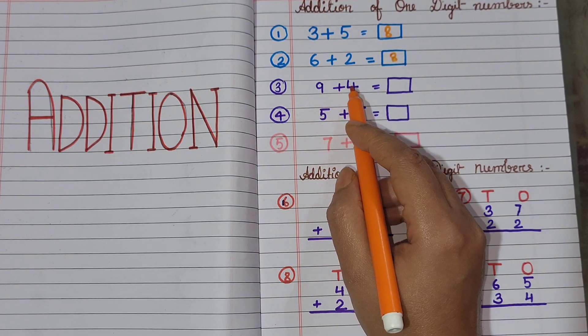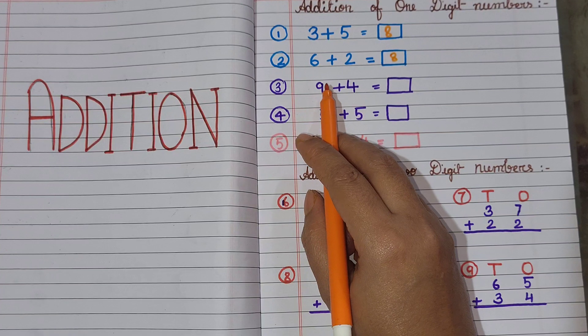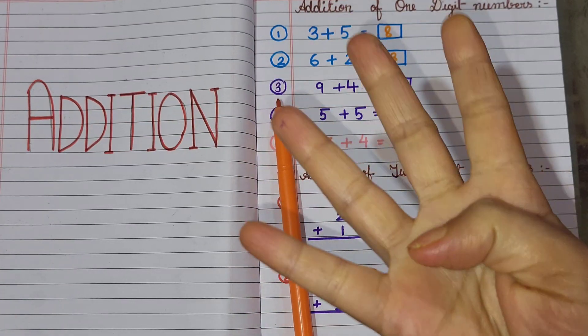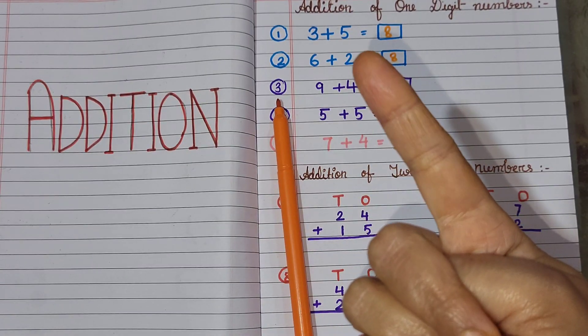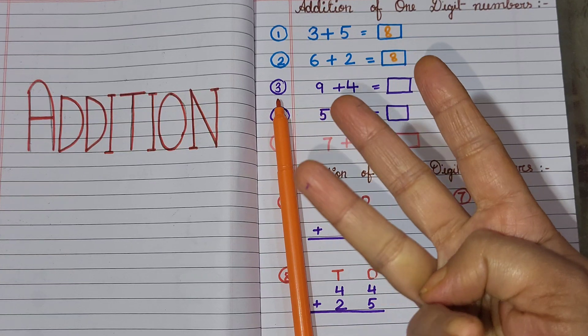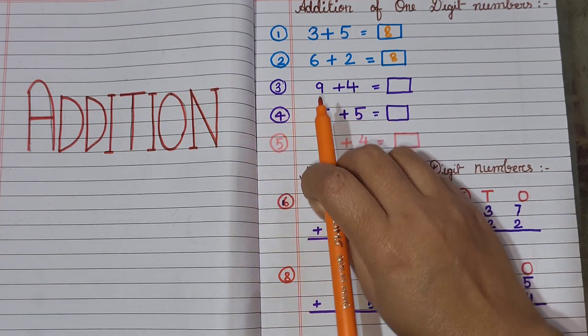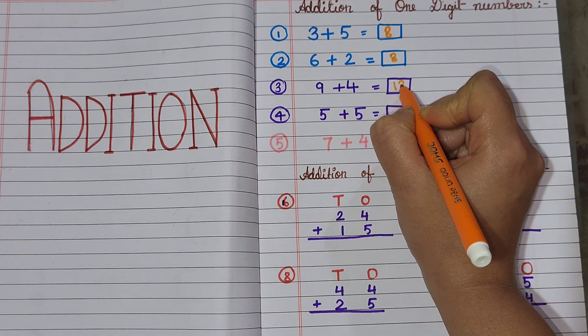Next, 9 plus 4. 9 in my mind and 4 fingers up. 9 ke baad konsa number? 10, 11, 12, 13. 9 plus 4 equals 13.